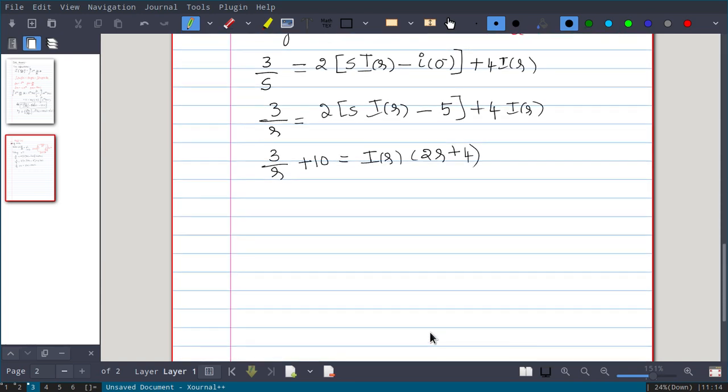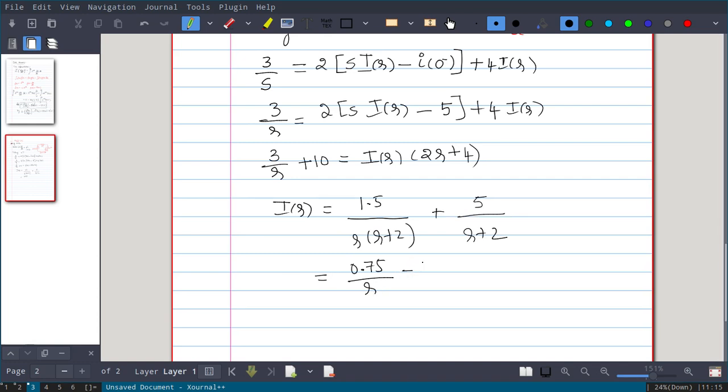Now if you further solve this, you get an expression for i(s). So i(s) is equal to 1.5 into s into s plus 2 plus 5 divided by s plus 2. Again using partial fraction this you have to separate, it will be a/s plus b/(s+2). So that you do and find value for a and b. I will directly write here. So it becomes 0.75 divided by s and minus another value is 0.75 divided by s plus 2 and this value is 5 by s plus 2. So this if you further solve this becomes 0.75 divided by s plus 4.25 divided by s plus 2.